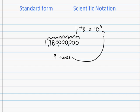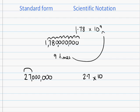What about changing a standard form number like 27,000,000 into scientific notation? I write down 2.7 times 10 to the power of — let's count: 1, 2, 3, 4, 5, 6, 7 — so it's 2.7 times 10 to the 7. Nice and easy, and you should be getting used to these by now.